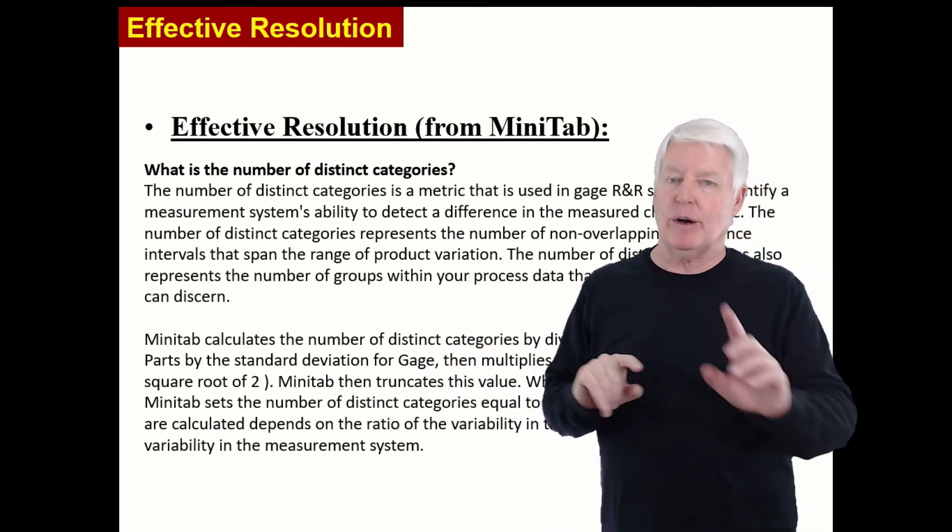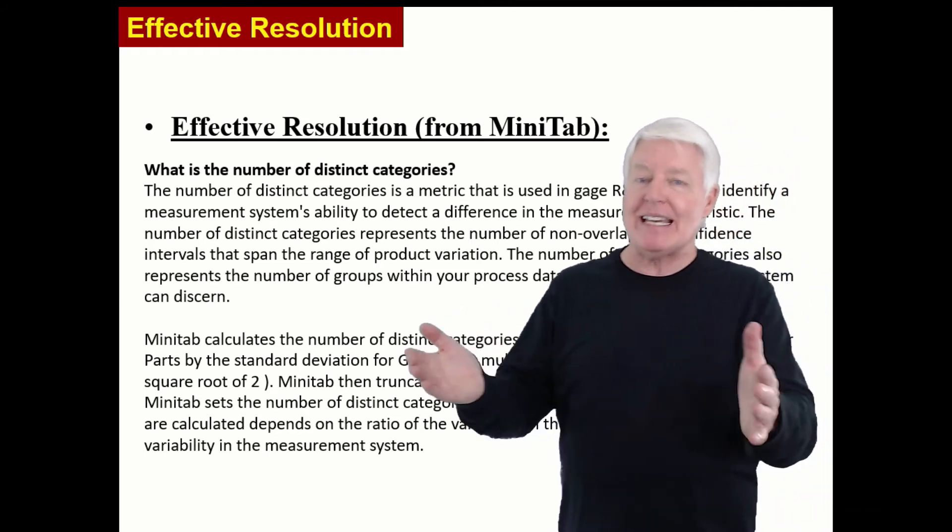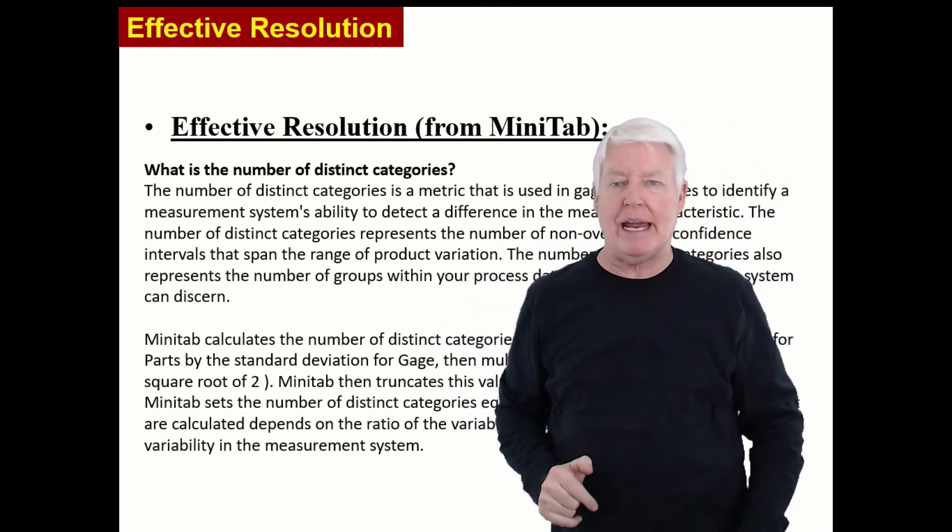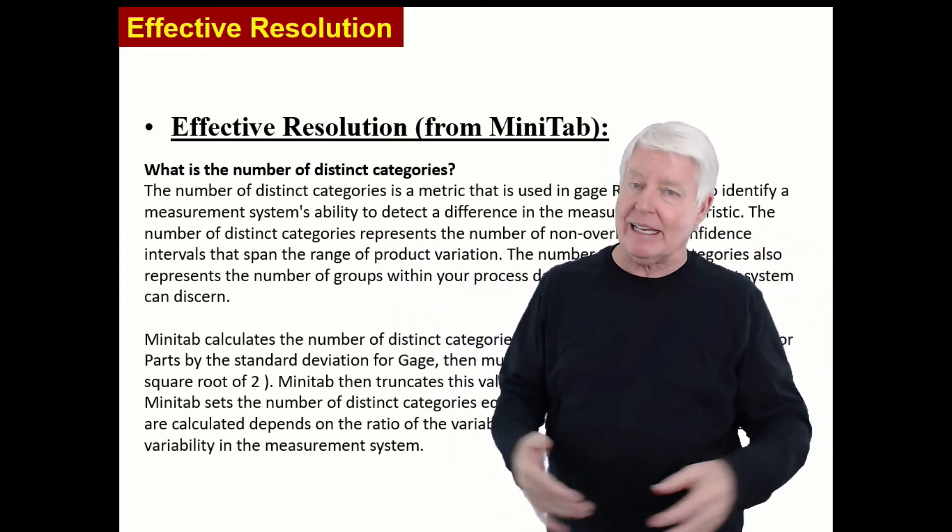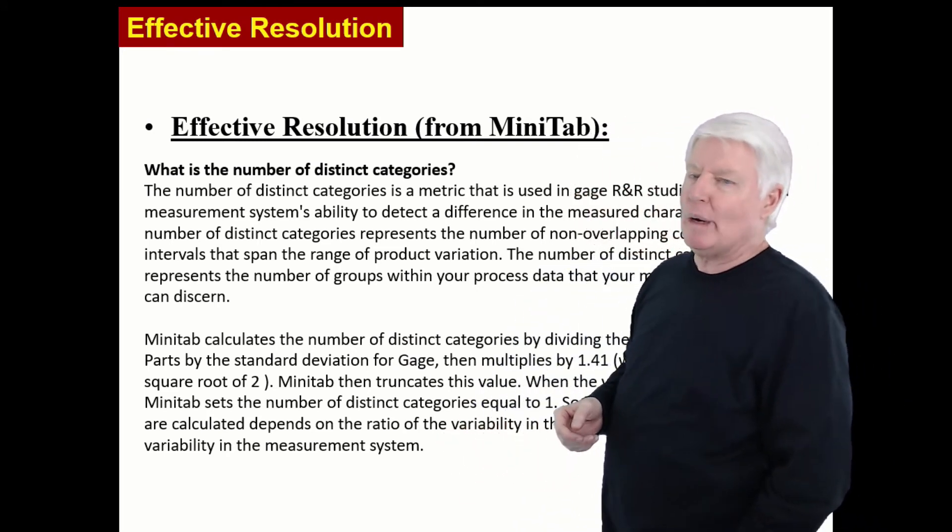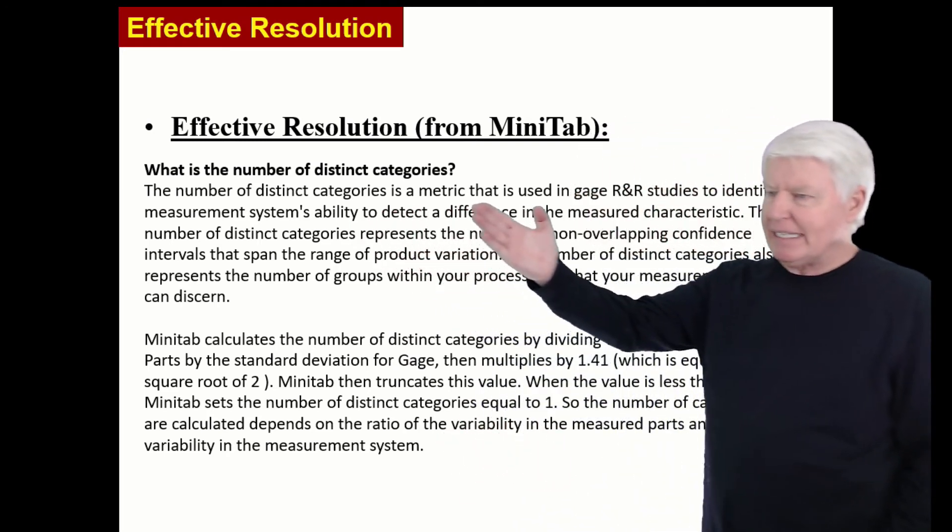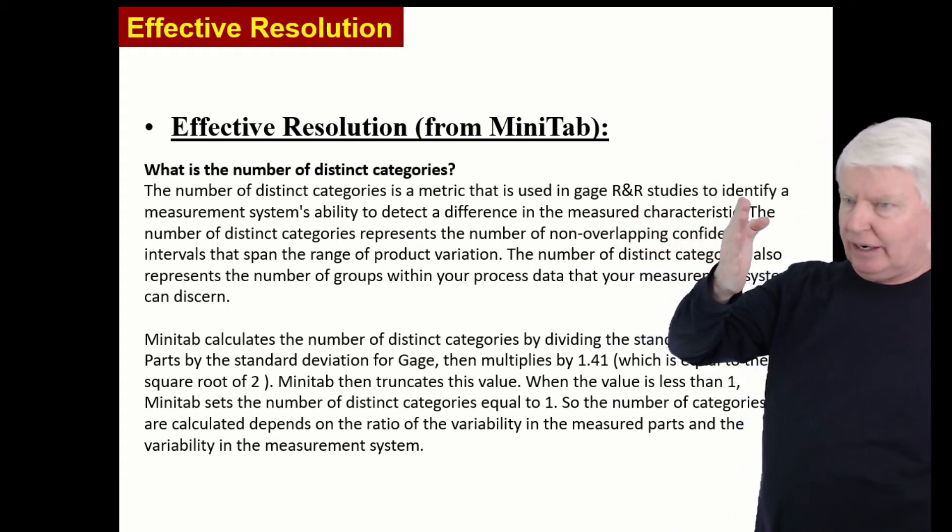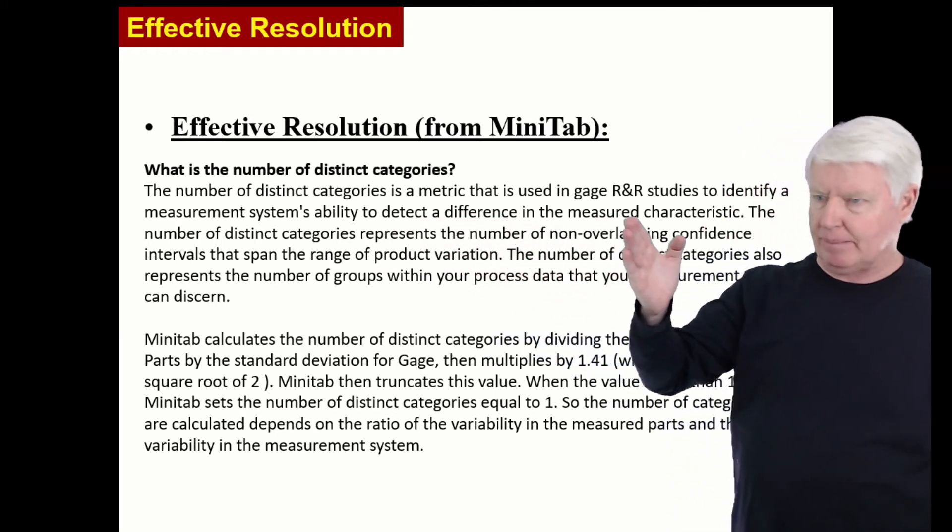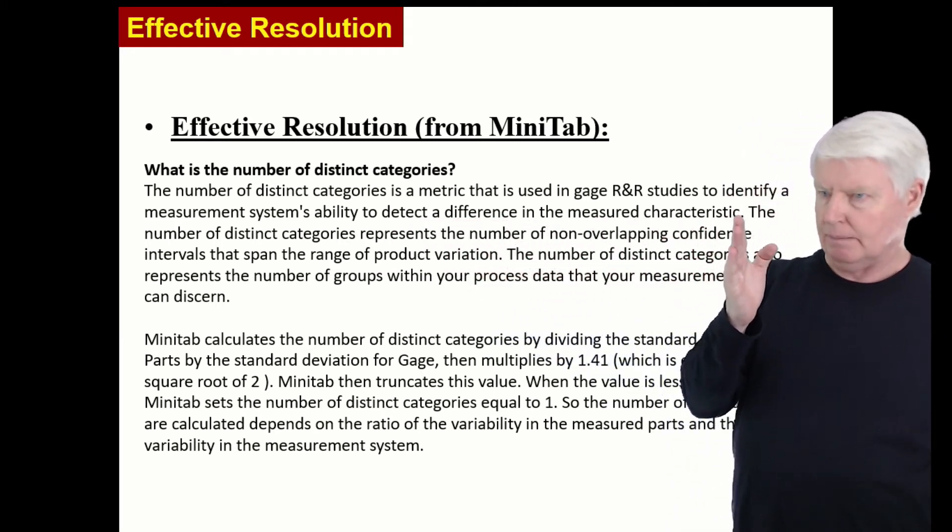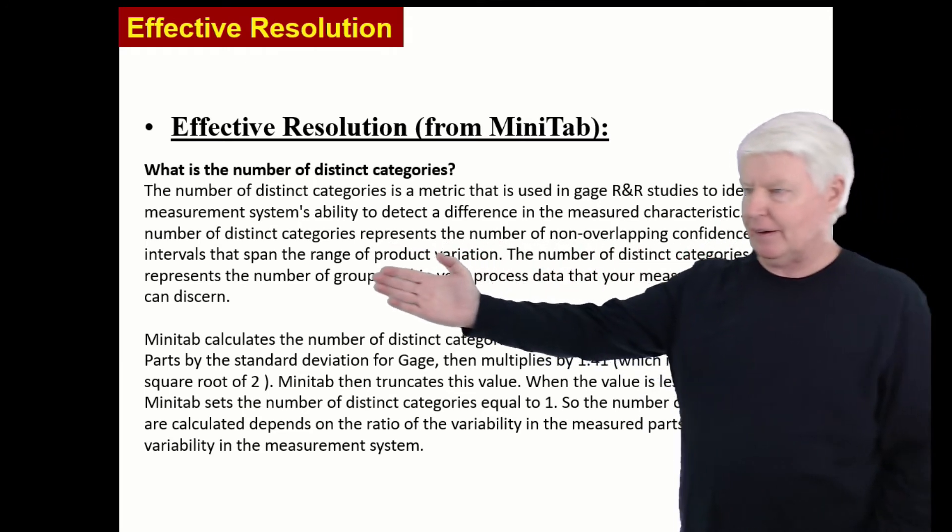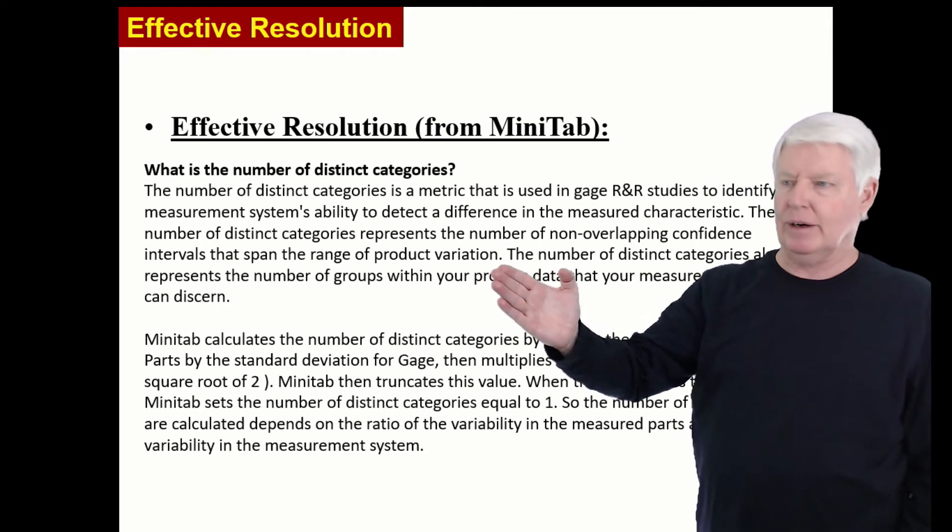So what is the number of distinct categories or NDC? Remember, we like NDC of five or greater. And you can think of it this way. This is the easiest way is how many columns does your measurement system create on the histogram. If it's five, that's the number of distinct categories is five. So that's the easiest way. But now we're going to get into the weeds a little deeper. The number of distinct categories is a metric that is used in gauge R&R studies to identify a measurement system's ability to detect a difference in the measured characteristic.